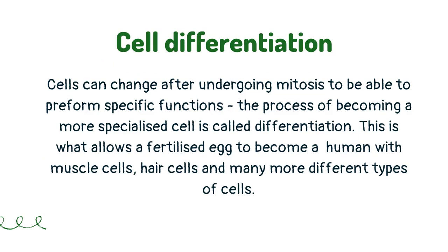Cells can change after undergoing mitosis to be able to perform specific functions. The process of becoming a more specialized cell is called differentiation. This is what allows a fertilized egg to become a human with muscle cells, hair cells, and many more different types of cells.